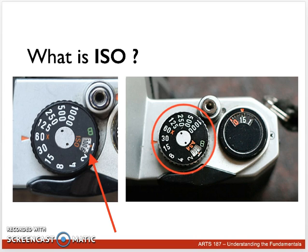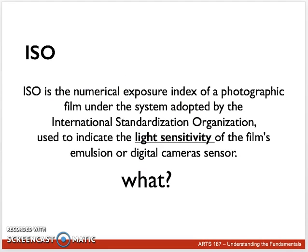So what is ISO? You can find how to adjust it on your camera by looking next to the shutter button. On most cameras you'll see a knob next to the shutter button with some numbers on it, and usually there's an adjustment called ISO — or on older cameras you'll see it called ASA — with some different numbers that correspond to ISO. In the picture here, we see the ISO or ASA is set to 100. ISO is an abbreviation which stands for the numerical exposure index of a photographic film under the system adopted by the International Standardization Organization, and is used to indicate the light sensitivity of a film's emulsion, or in the case of digital cameras, the digital sensor.